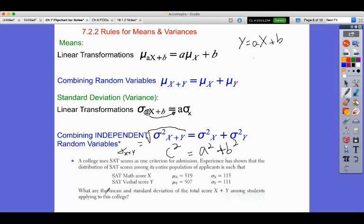So these means, what are the mean and standard deviation if we add them together? Well, the mean we can get by doing mu of x plus y is just mu of x plus mu of y, which comes out to 519 plus 507, which is 1026.